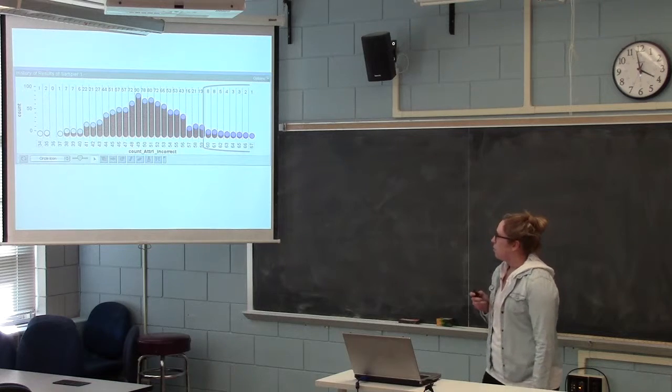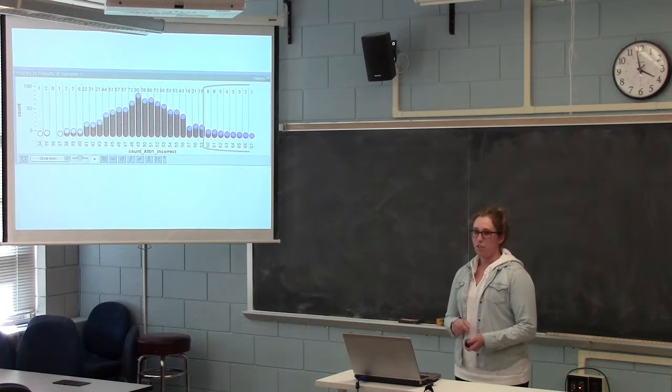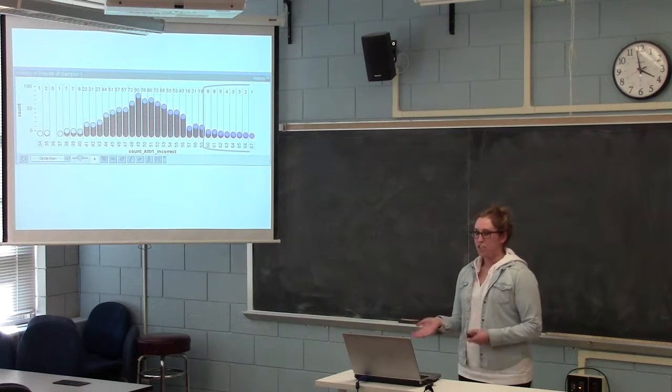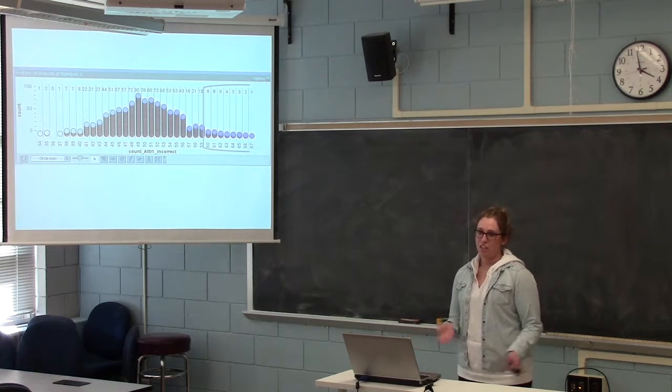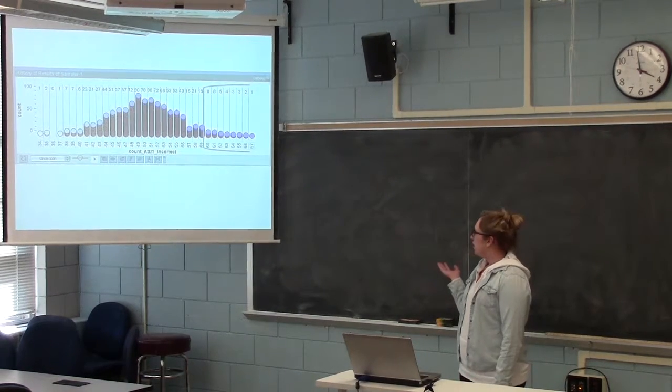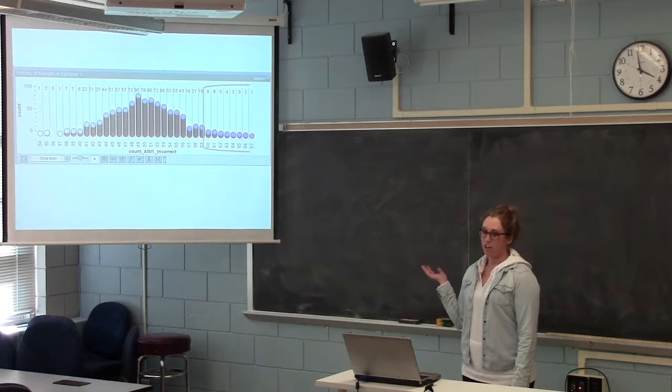We could flip this around the other way, where we're measuring the total number of questions she answers incorrectly. So since she answered 30 questions correctly, she answered 70 incorrectly. And again, we don't see 70 on the chart at all.